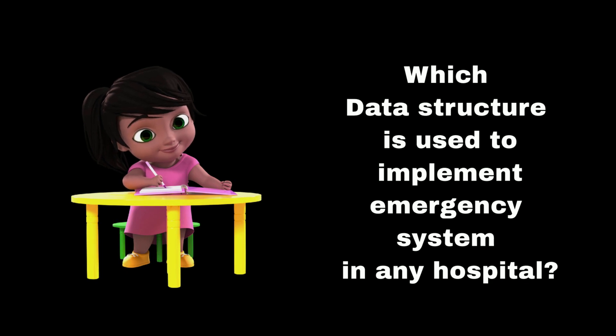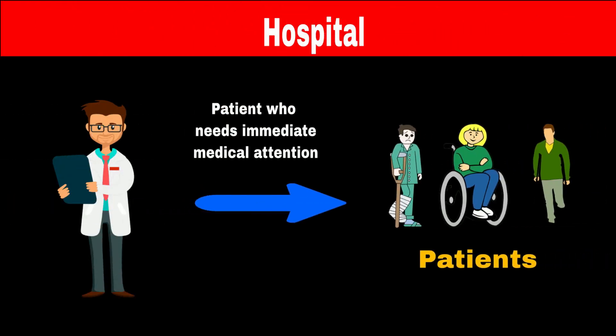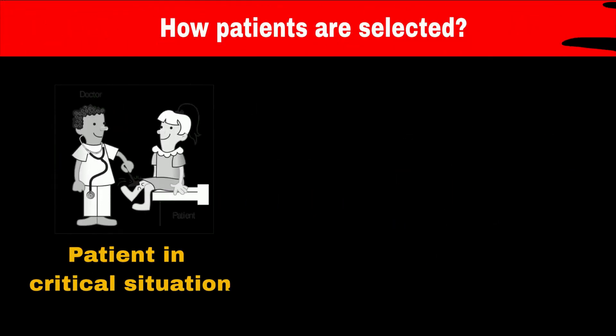Do you know which data structure is used to implement the emergency system in any hospital? In the hospital, the patient who needs immediate medical attention will visit the doctor first. This means priority is given to the patient who is in a critical situation. So it doesn't matter who comes first or who comes last — whoever needs immediate medical attention will visit the doctor first.